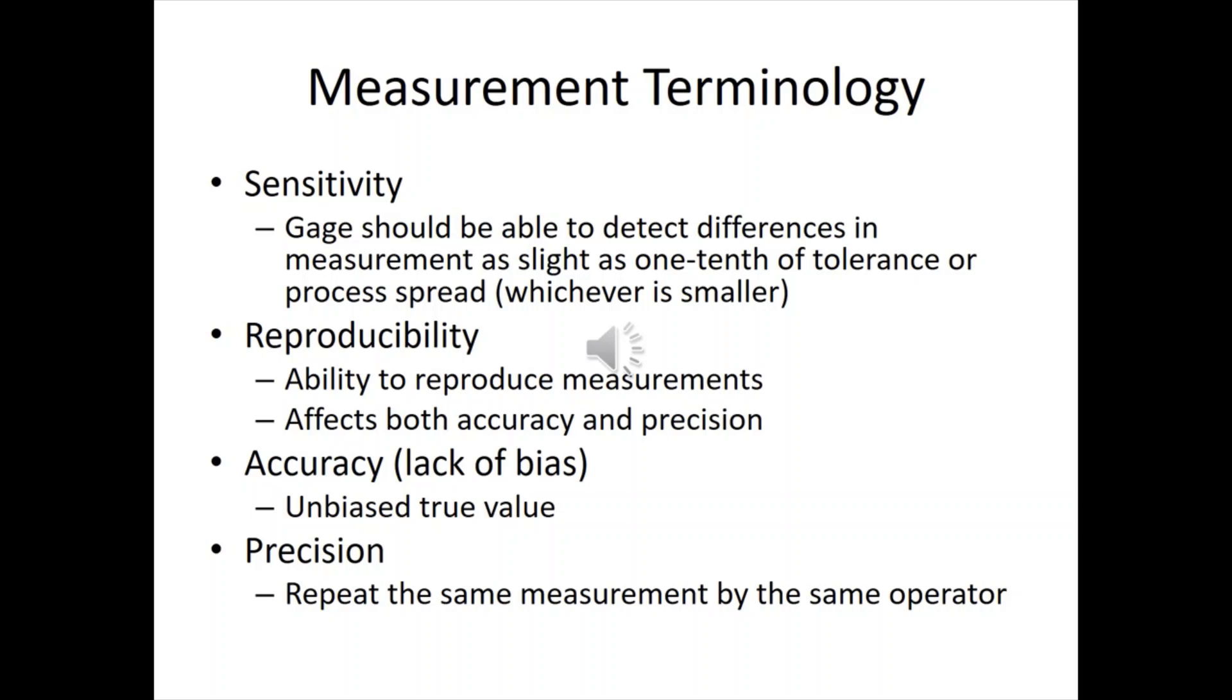Accuracy being a lack of bias. So when you see a gauge that calls out, I don't know, 3.25 inches, the piece you're measuring should be 3.25. You don't want the gauge reading 3.28 or something like that. You want it to be reading whatever the true value is.